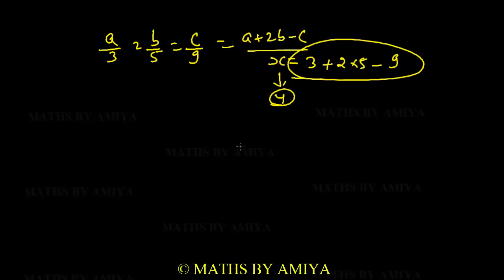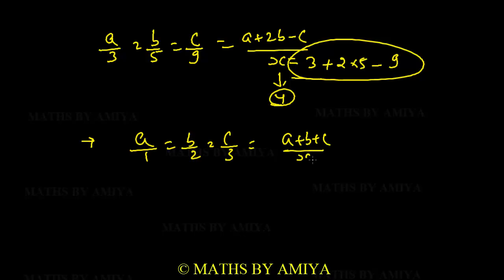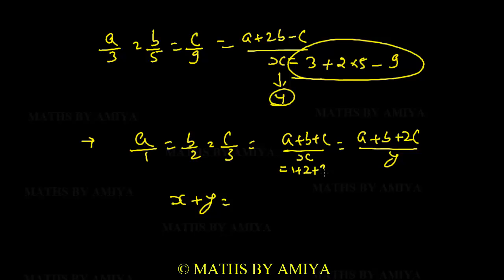Now practice with another question: a/1 = b/2 = c/3 = (a+b+c)/x = (a+b+2c)/y. Find x+y. For x: 1+2+3 = 6. For y: 1+2+2×3 = 1+2+6 = 9. So x+y = 6+9 = 15.